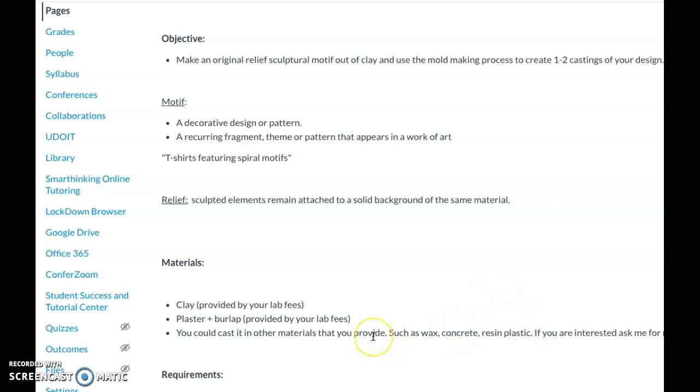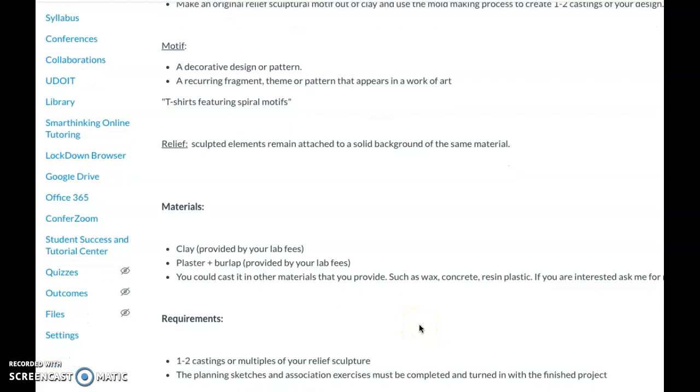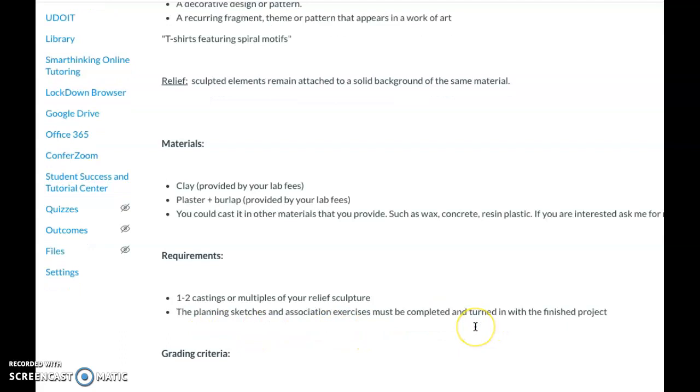Casting materials are all materials that are liquid and then hardened somehow. It's a chemical reaction in concrete, plaster, resin. Wax hardens, metal, all kinds of things are castable, even water becomes ice, right? So you're going to want to do some planning sketches to turn in with the project pictures of them.